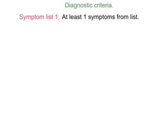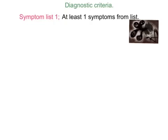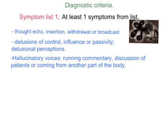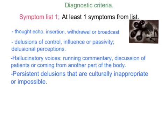There are two symptom lists in diagnosing schizophrenia. Symptom List 1 requires at least one symptom from the list to be present. These are: Thought Echo, Insertion, Withdrawal or Broadcast; Delusions of Control, Influence or Passivity; Delusional Perceptions; Hallucinatory Voices such as running commentary, discussion of patients, or voices appearing to come from another part of the body; and finally, persistent delusions that are culturally inappropriate or impossible.